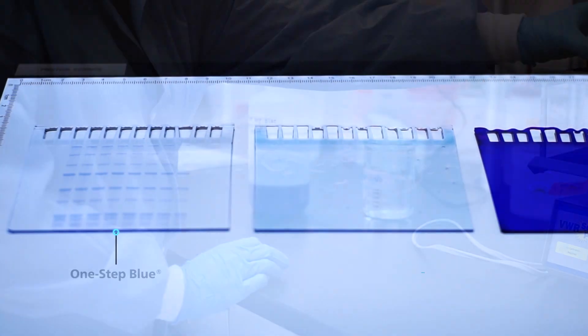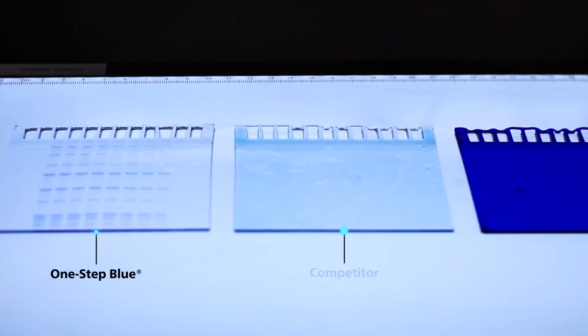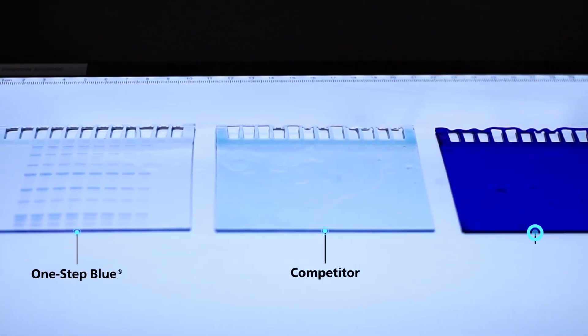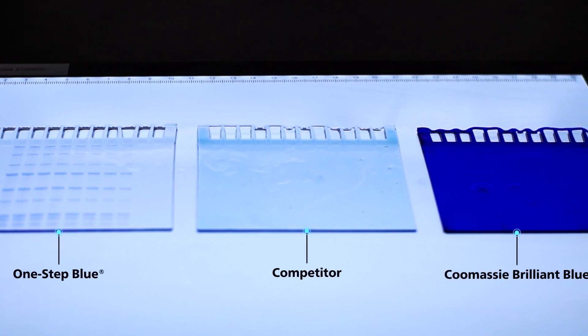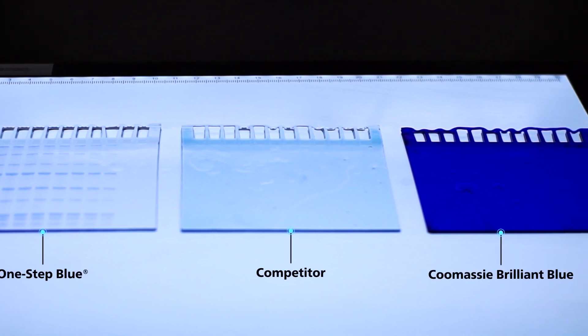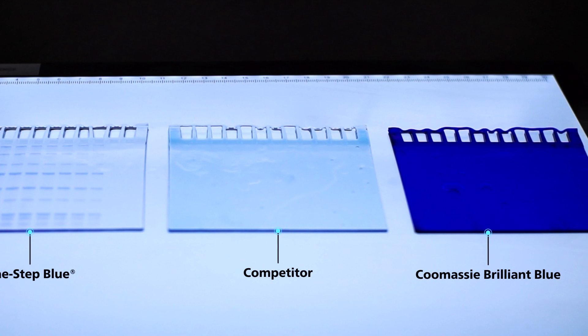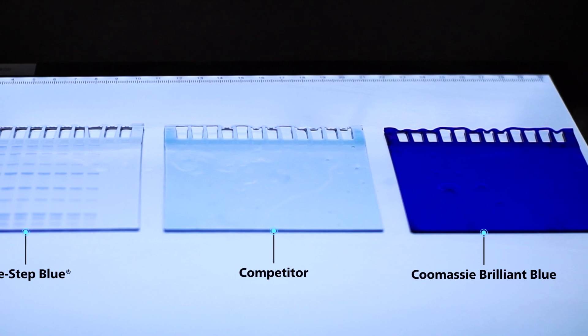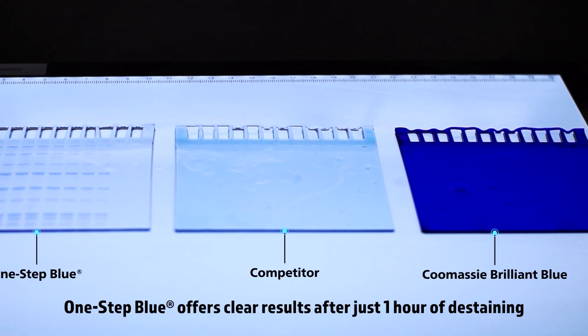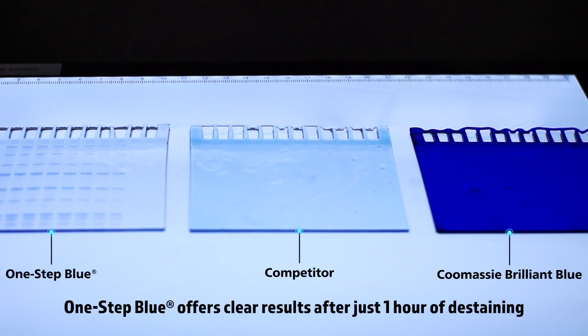For comparison, we stain two other gels with Coomassie Brilliant Blue and another commercially available Blue Protein Gel Stain. While gel staining with Coomassie or other protein stains can require de-staining for several hours or overnight, One Step Blue offers clear results after just one hour of de-staining.